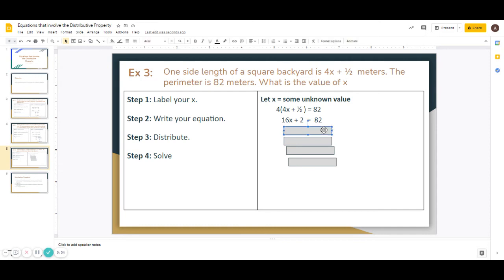And next, you're going to subtract 2 on both sides, and you get 16x is equal to 80. Now here, you're going to divide both sides by 16, and then you get x is equal to 5. So value of x, x is equal to 5.